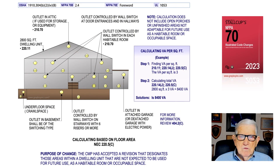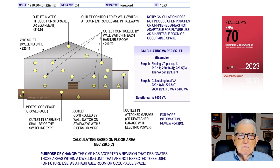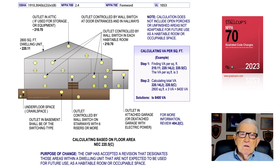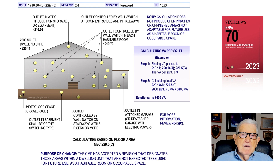This illustration deals with calculating loads based upon the floor area in accordance with NEC 220.5(c). The purpose of this change is to define the area that must be used to calculate the loads. The note reads: the calculation does not include open porches and unfinished areas not adaptable for future use as habitable rooms or occupied space. Those areas are not included in the calculation. In the calculation we have a 2,800 square foot dwelling.